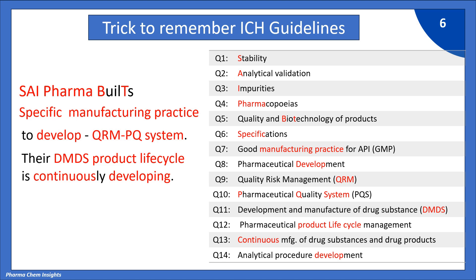In the next sentence: "Their DMDS product life cycle is continuously developing." DMDS is the short form for Q11 guidelines, development and manufacture of drug substance. Product life cycle decodes Q12, pharmaceutical product life cycle management. Continuously decodes Q13, continuous manufacture of drug substances and drug products. And developing decodes Q14, analytical procedure development.